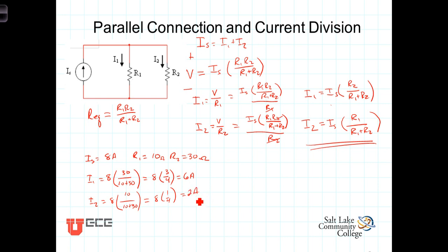So for consistency, let's note that I1 plus I2, 6 plus 2 is 8, the current coming into it. Let's also note that because R1 is the smaller resistor, the current through R1 is going to be greater than the current through R2, where R2 is the larger resistor.